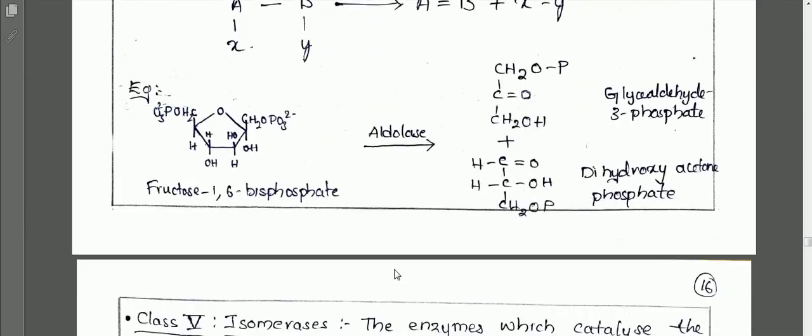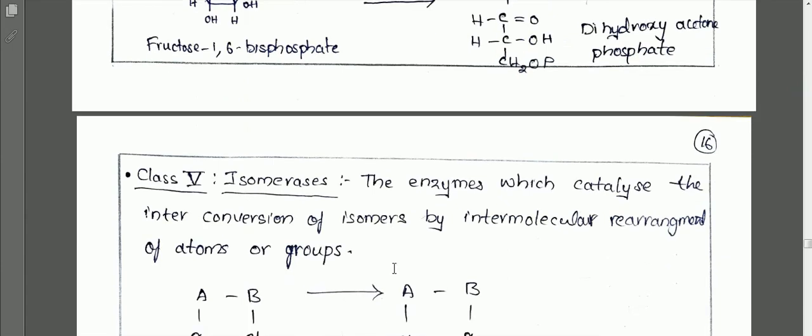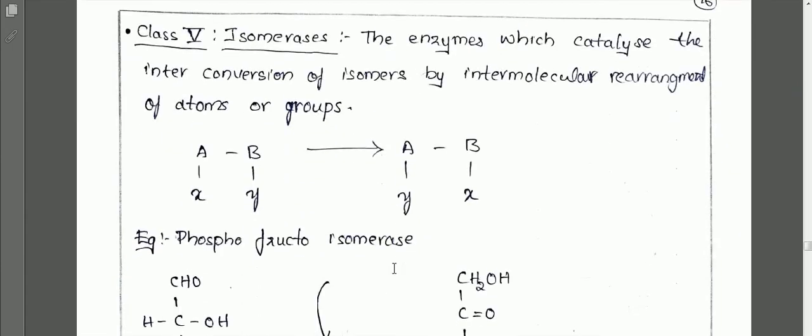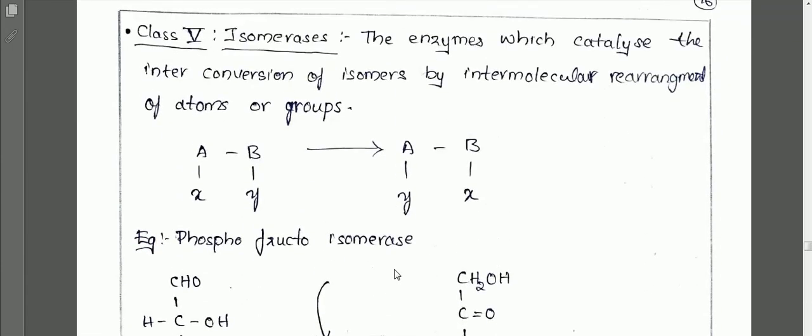The next class is class 5: isomerases. Isomerases are enzymes which catalyze the inter-conversion of isomers.